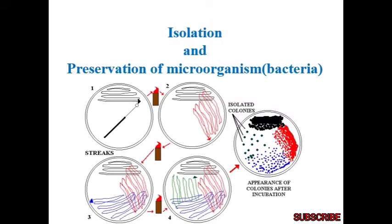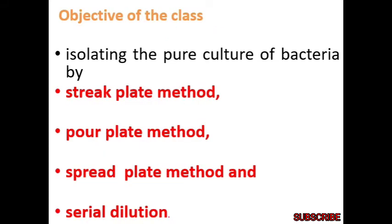Today we will discuss isolation and preservation of microorganisms. This is a simple technique shown by pictorial arrangement. There are certain isolated colonies which you have seen through the green dots here — these are isolated colonies. The objective of today's class is that we will study isolating the pure culture of bacteria by different methods: streak plate method, pour plate method, spread plate method, and serial dilution method. In the streak plate method there are two methods: continuous streak plate method and discontinuous streak plate method.